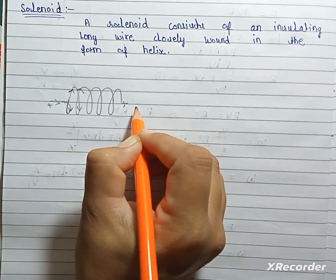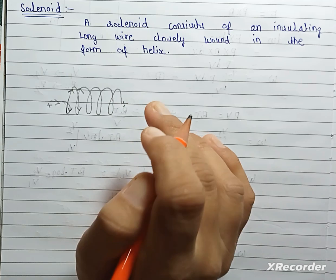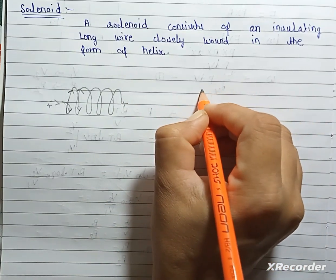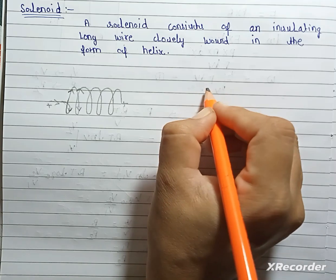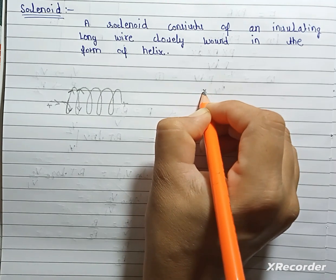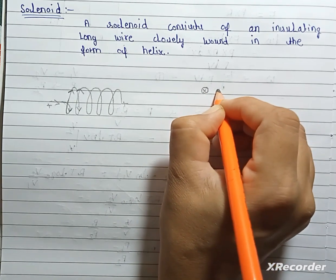Now, for upper side current going downward direction. Downwards represented by this is not direction of magnetic field, this is direction of current.